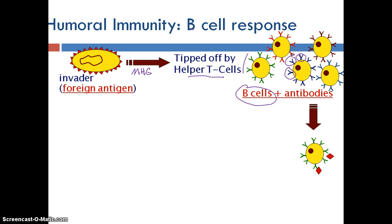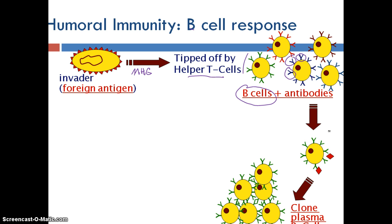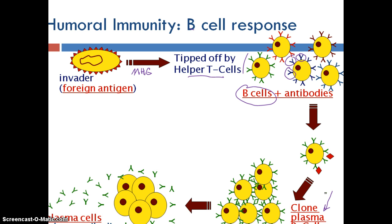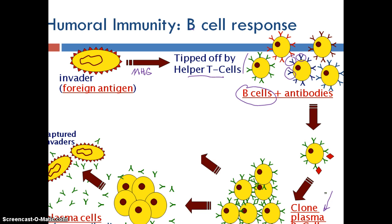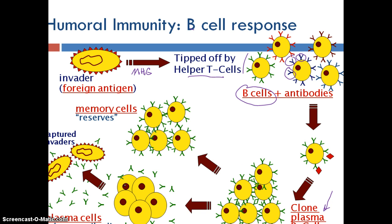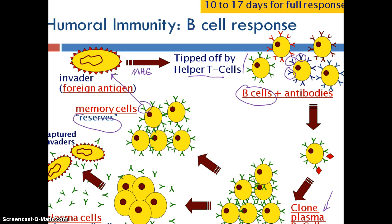Eventually the right antibodies are identified — the ones that are going to match up with the invader. Those B cells then make mass quantities, and we call them plasma B cells. Those plasma B cells release all those antibodies, which simply handcuff the invaders and immobilize them — they're not destroying them yet, just handcuffing them. At the same time, your body also makes memory B cells, which act as reserves. Memory B cells remember the right antibody for the right antigen, so if you ever get that same invader again, they'll know immediately how to get rid of it.